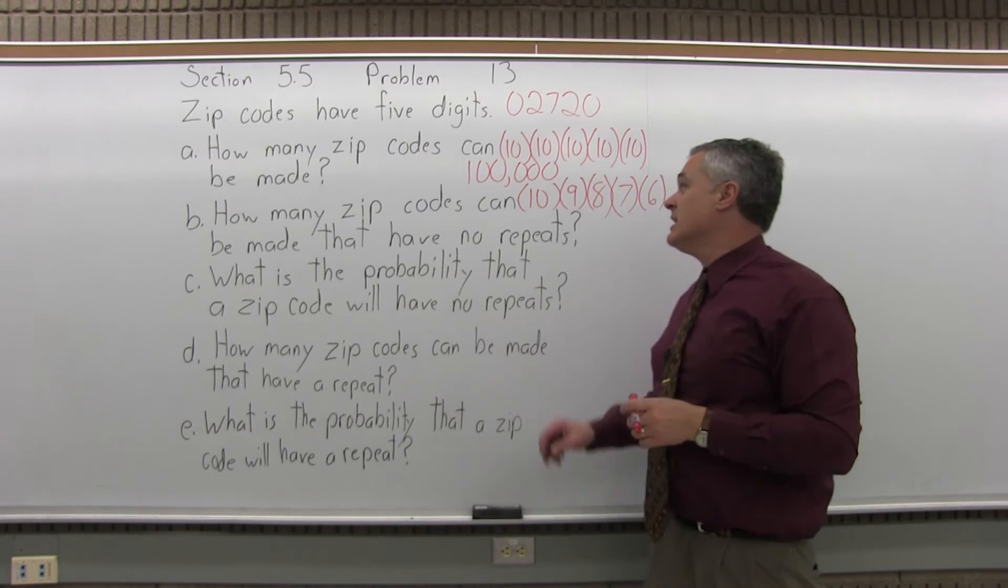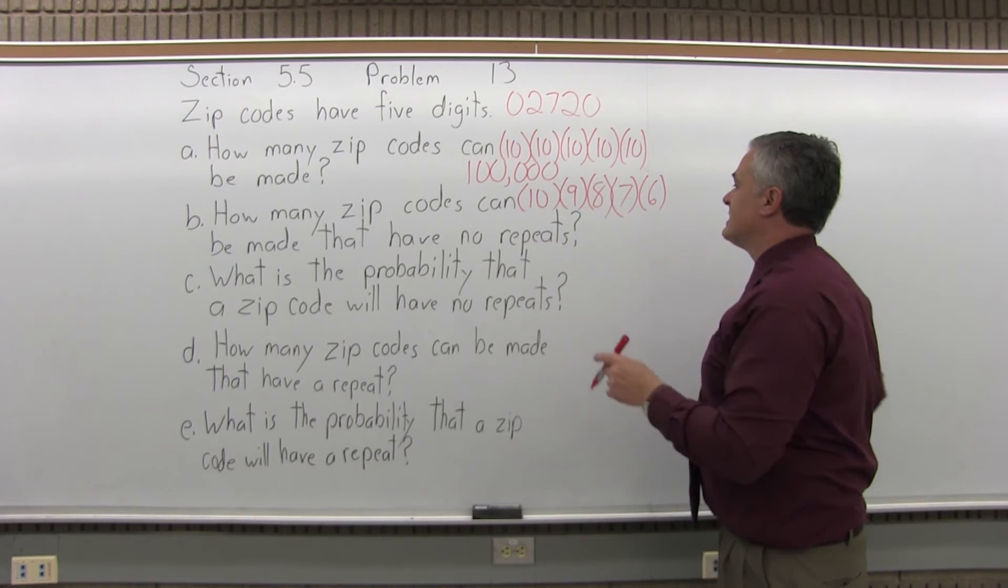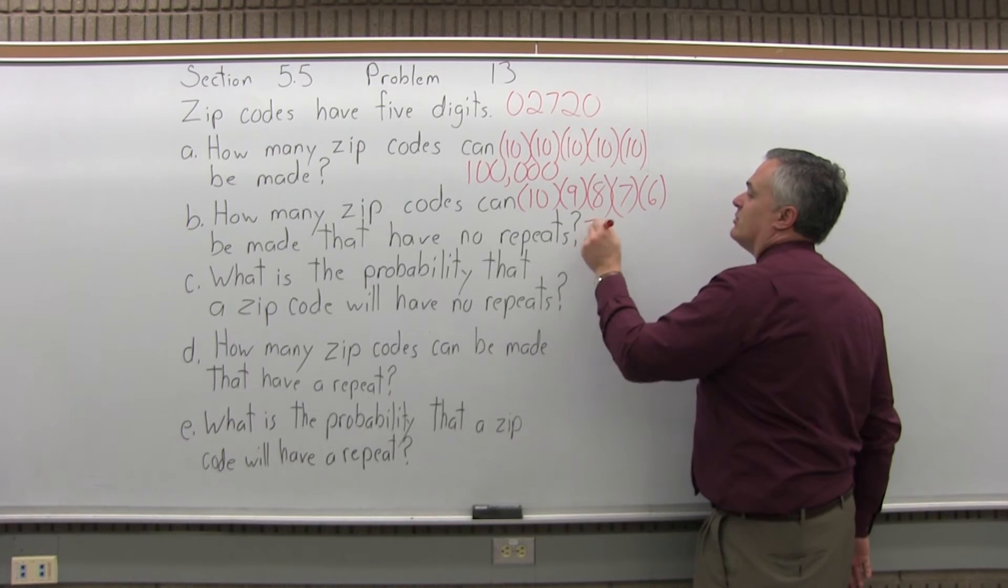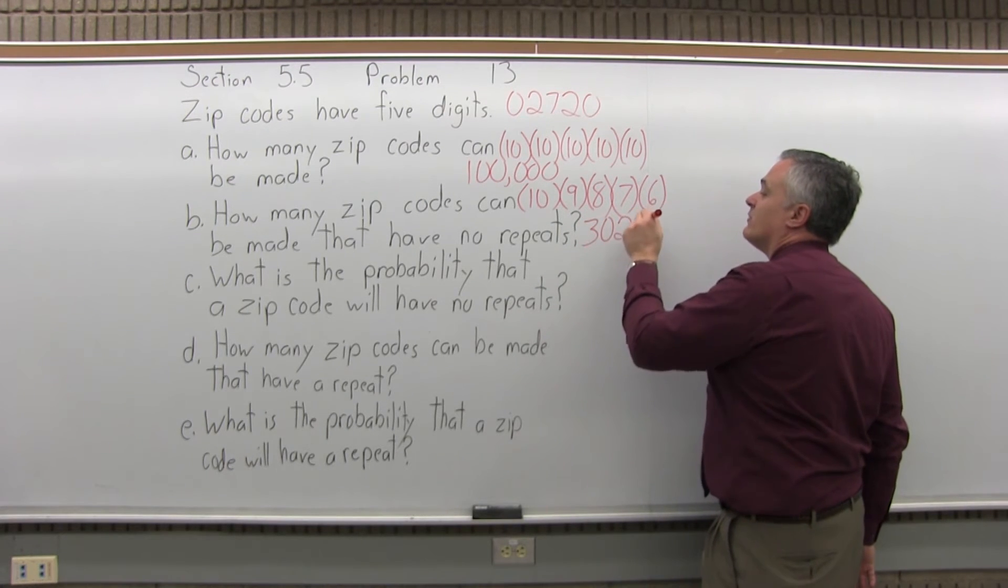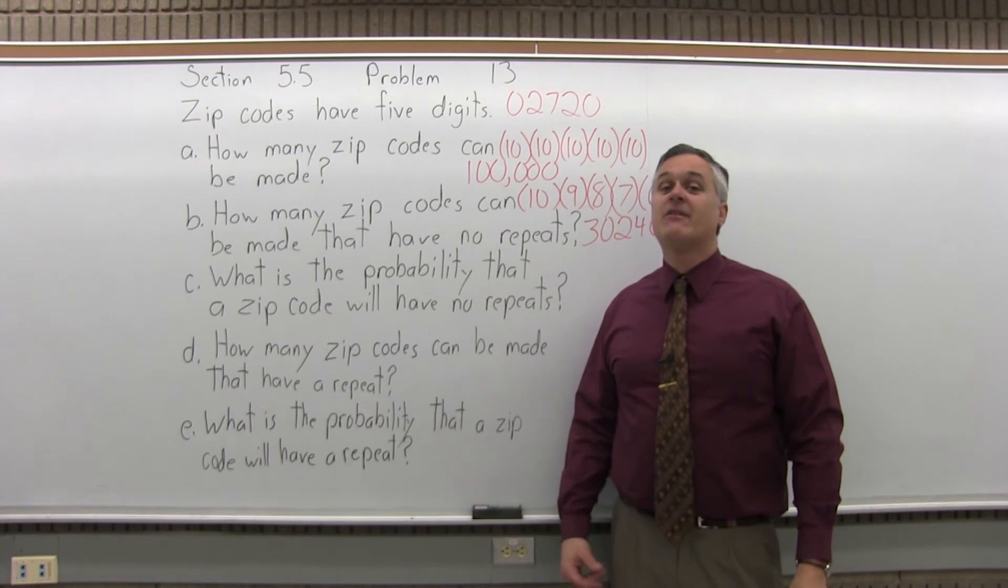And if you multiply ten times nine times eight times seven times six, that answer comes out to 30,240. So you can make 30,240 different zip codes that have no repeats.